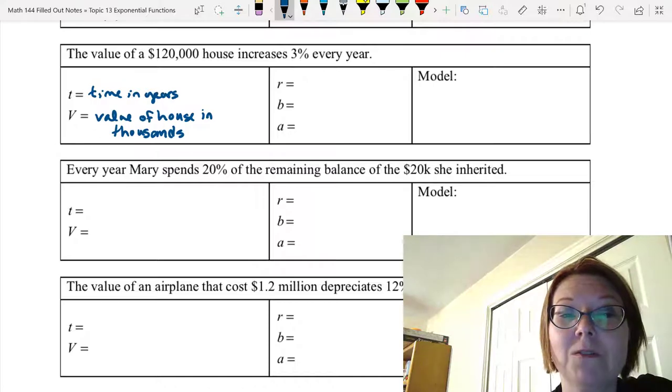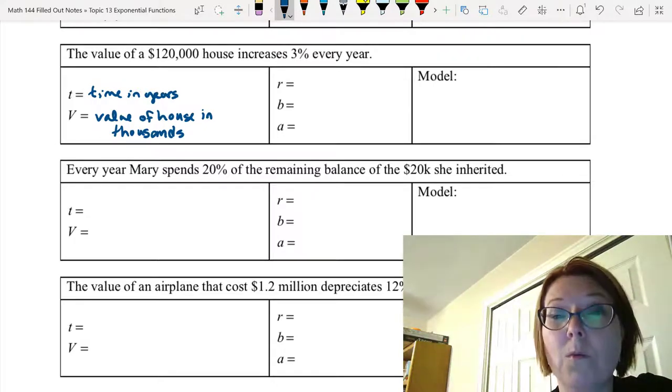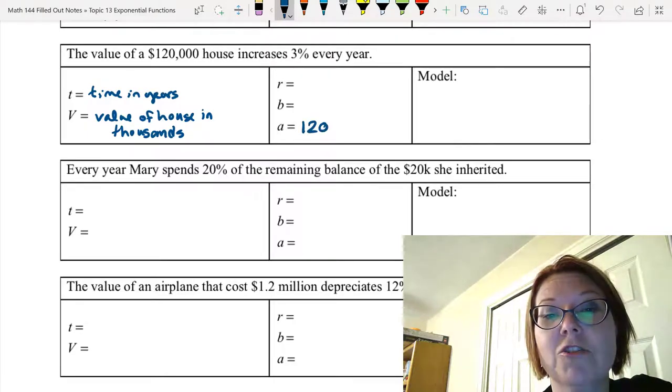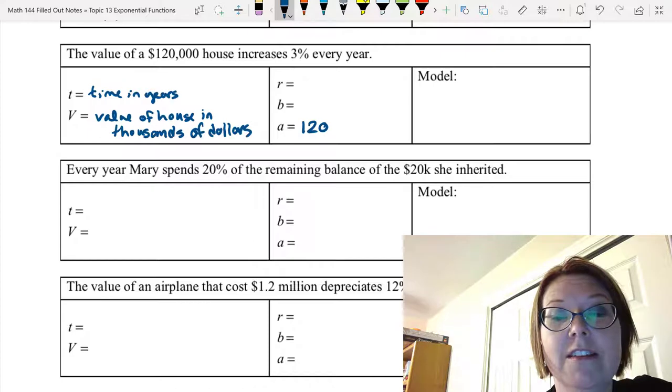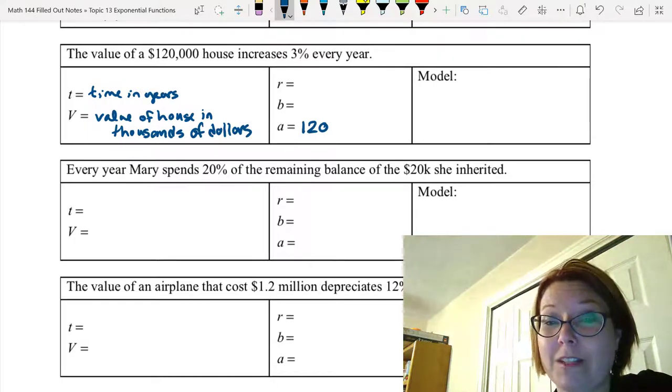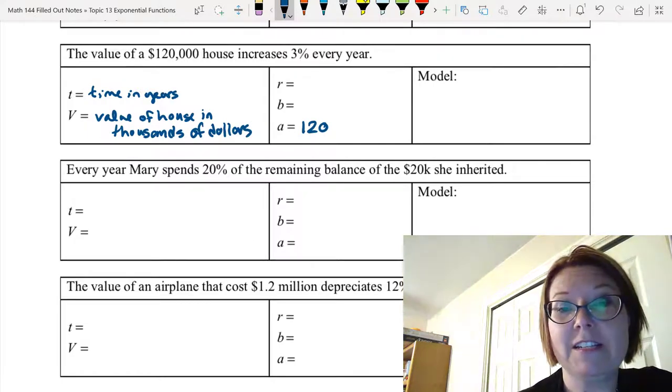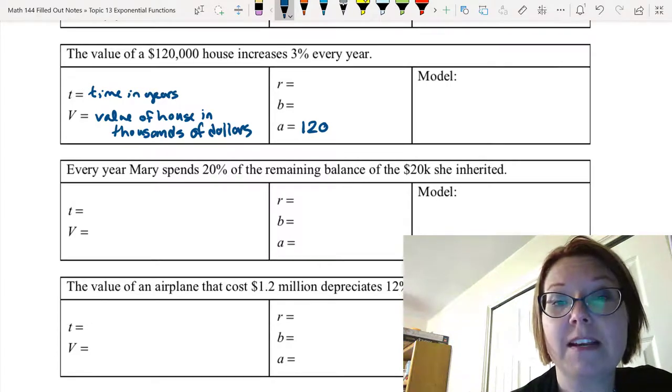Now you don't have to do that part. But if you do the value of the house in thousands, you can get away with writing 120 for the initial value. If you did just the value of the house in dollars instead of thousands of dollars, then your A value needs to be 120,000. My rate is going to be a 3% increase.